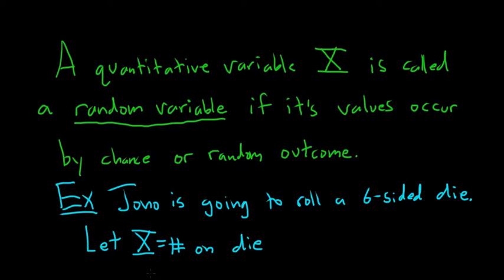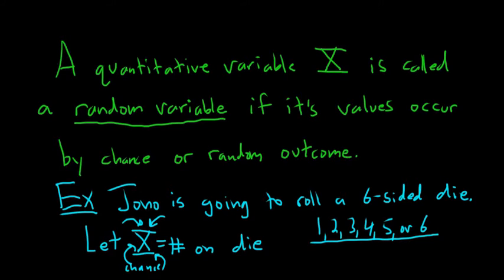So capital X is a variable. It could be any number between one and six, because there's six sides on the die. So Jono hasn't rolled the die yet, so the values of capital X occur by chance or by some random outcome. Because Jono will be rolling the die. So capital X can be one, two, three, four, five, or six. It could be any of these numbers. And all of these values occur by chance or random outcome. So that's an example of a random variable.